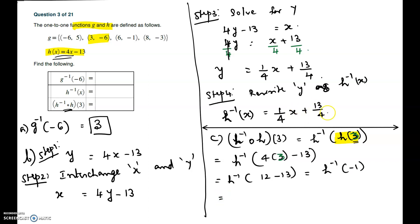From the earlier part B, we found h inverse of x = (1/4)x + 13/4. In this relation, we are going to plug in the new input, which is -1. So it is (1/4)(-1) + 13/4.